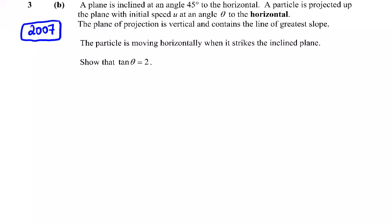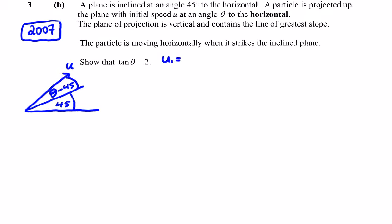In the 2007 projectiles on an inclined plane question, we have a plane inclined at an angle 45 to the horizontal. We have a particle projected up the plane with speed u and an angle theta to the horizontal. So in here we have theta minus 45. We set up the initial velocity vector: u cos(θ-45) in the i direction, plus u sin(θ-45) in the j direction.